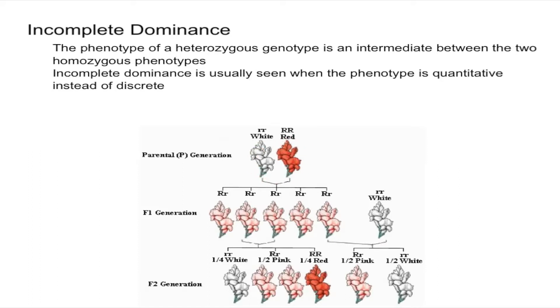If this wasn't incomplete dominance, all of these would be actually red because red is dominant. However, they're all pink. Some people actually like to think of incomplete dominance kind of as a blending, which you could think about it like that if it helps.